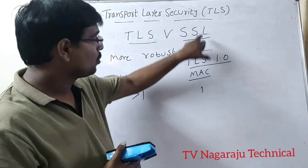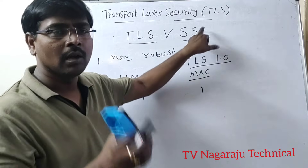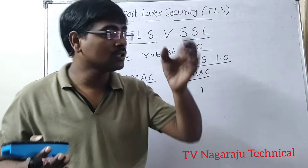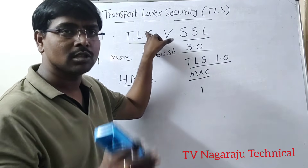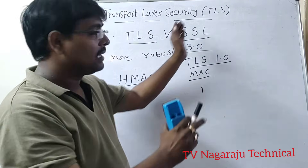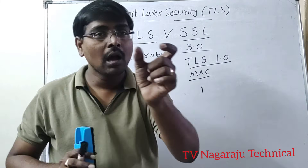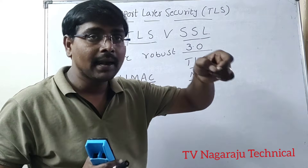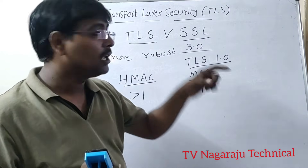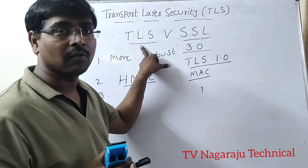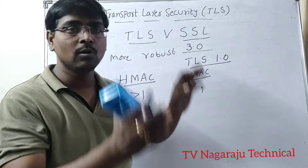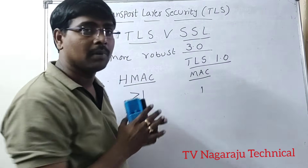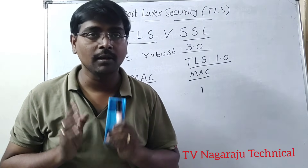TLS is the next version of SSL. One simple thing: if you are using a website, you can check whether it follows TLS by opening the URL. If a padlock appears on the right side of the URL, that website follows TLS. If you click on the padlock, it gives complete details of the TLS certificate. This is the concept of Transport Layer Security. Thank you.